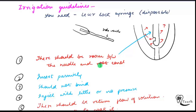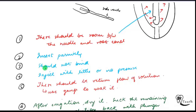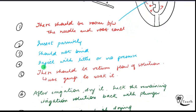You must insert the needle passively — do not apply much force — and the needle should not bind. If it is binding, that means the space between the needle and canal is not present, and when you inject in such a situation it will definitely go apically and cause infection and further damage. Inject with little or no pressure, and there should be return flow of the solution.